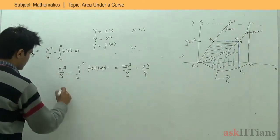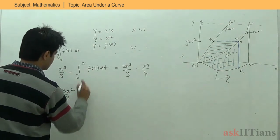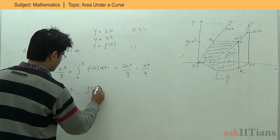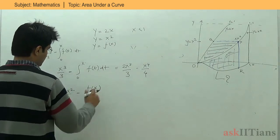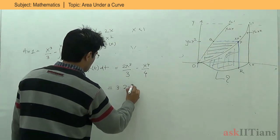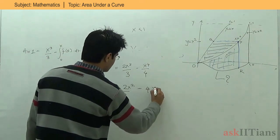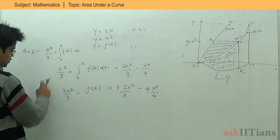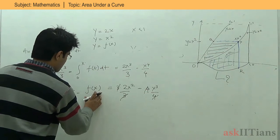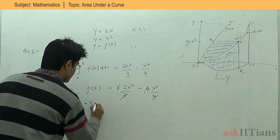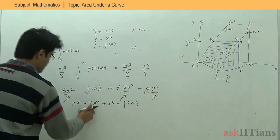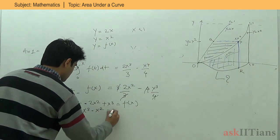Differentiating both sides: the left side gives X squared minus F(X) — noting that F(0) equals 0 from the figure — and the right side gives 3 times 2X squared by 3 minus 4 times X cubed by 4, which simplifies to 2X squared minus X cubed. Rearranging and simplifying, we get F(X) equals X squared minus 2X squared plus X cubed, which further simplifies to F(X) equals X cubed minus X squared.